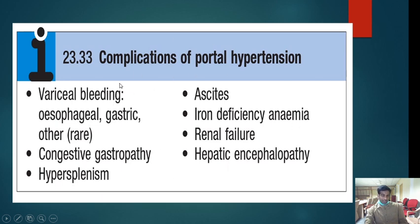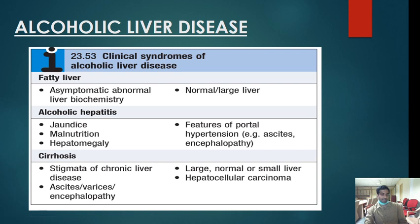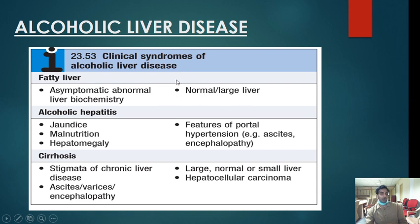I will talk about complications in detail in the next class. Alcoholic liver disease has three categories. The first and most common is fatty liver, seen in around 80 to 90% of patients with alcohol abuse. It is the initial stage — asymptomatic with abnormal liver biochemistry. Enzymes and bilirubins are completely normal; only GGT may be slightly raised. The liver is normal or shows mild hepatomegaly. It is a reversible condition — the patient gets back to normal once alcohol is stopped.